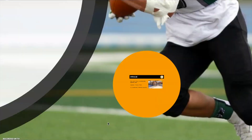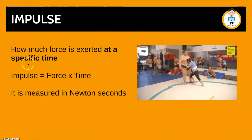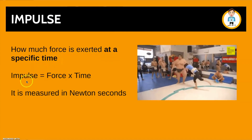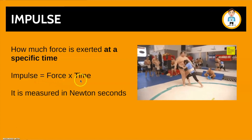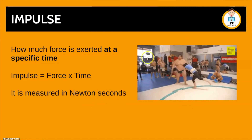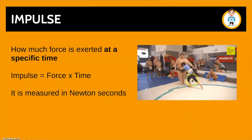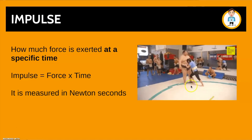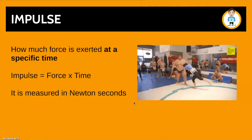Finally, we have impulse. This is simply how much force is exerted at a specific moment in time. The equation is: impulse equals force times time, and it is measured in Newton seconds. In this video, impulse would be the amount of force exerted when this lady is pushing the sumo wrestler outside the circle.